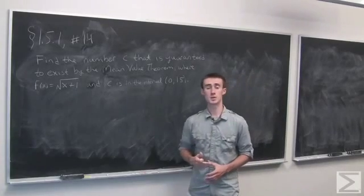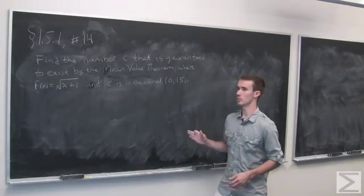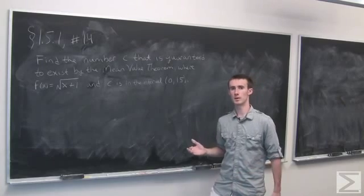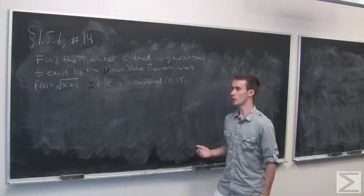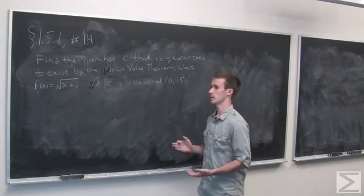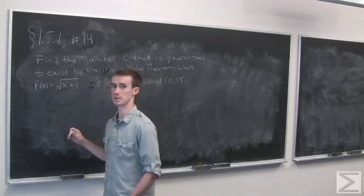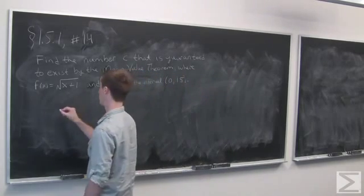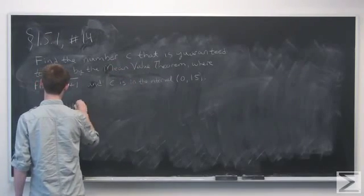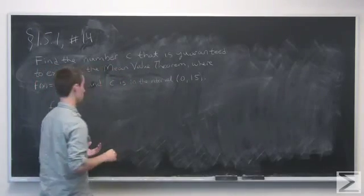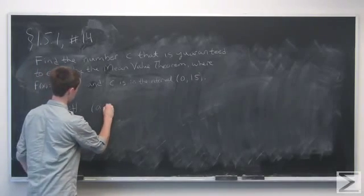Problem number 14 of section 1.5.1 asks us to find the number c that the Mean Value Theorem guarantees exists. If you recall, the Mean Value Theorem says that if we're given a function that is differentiable on some open interval, say (a, b),